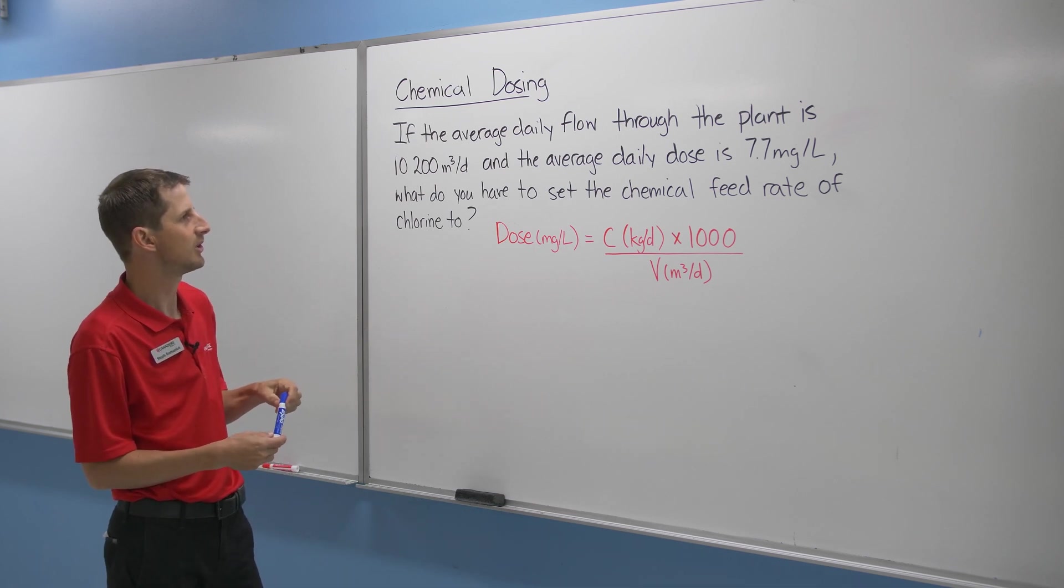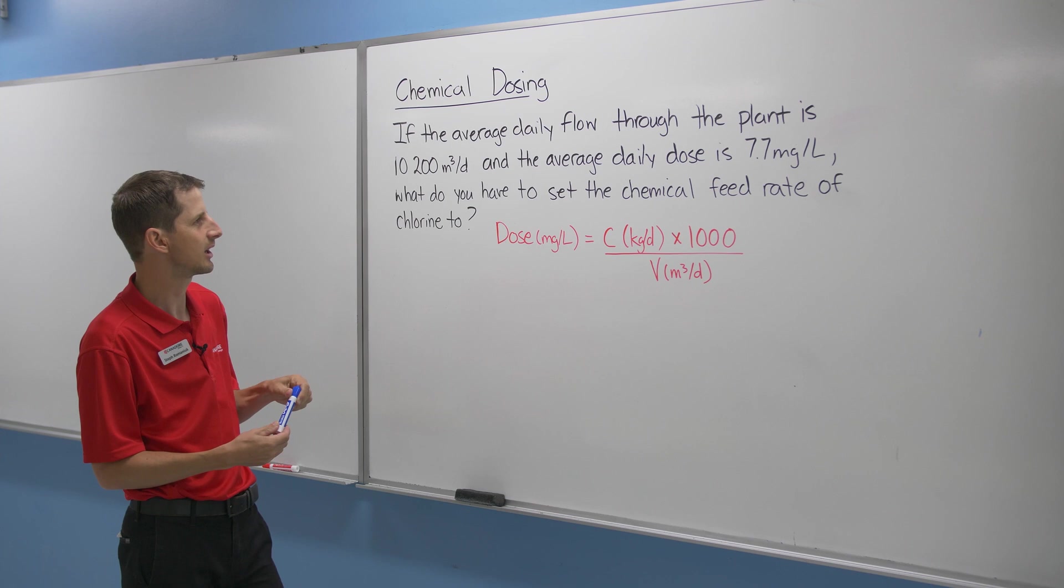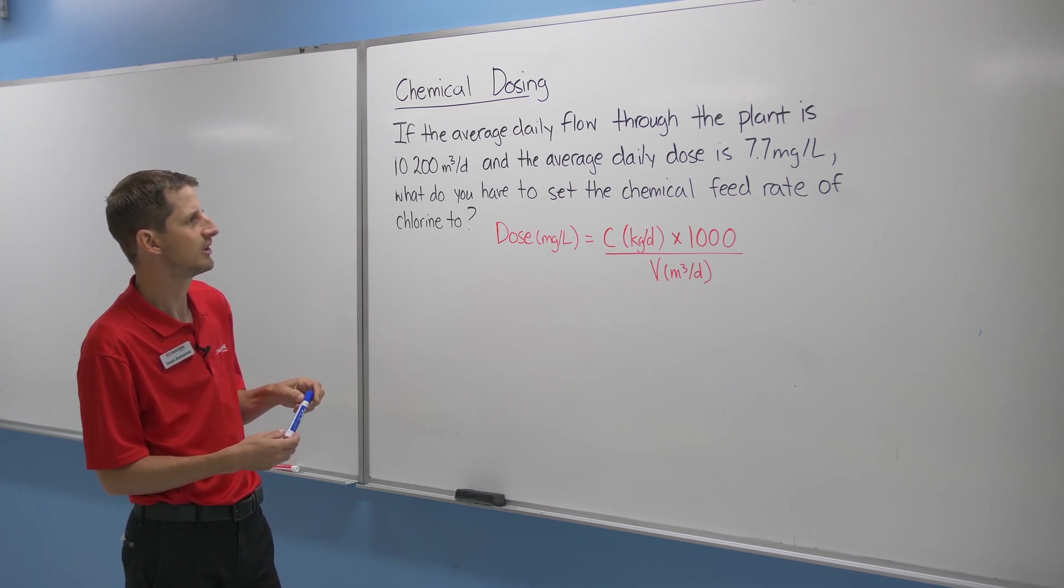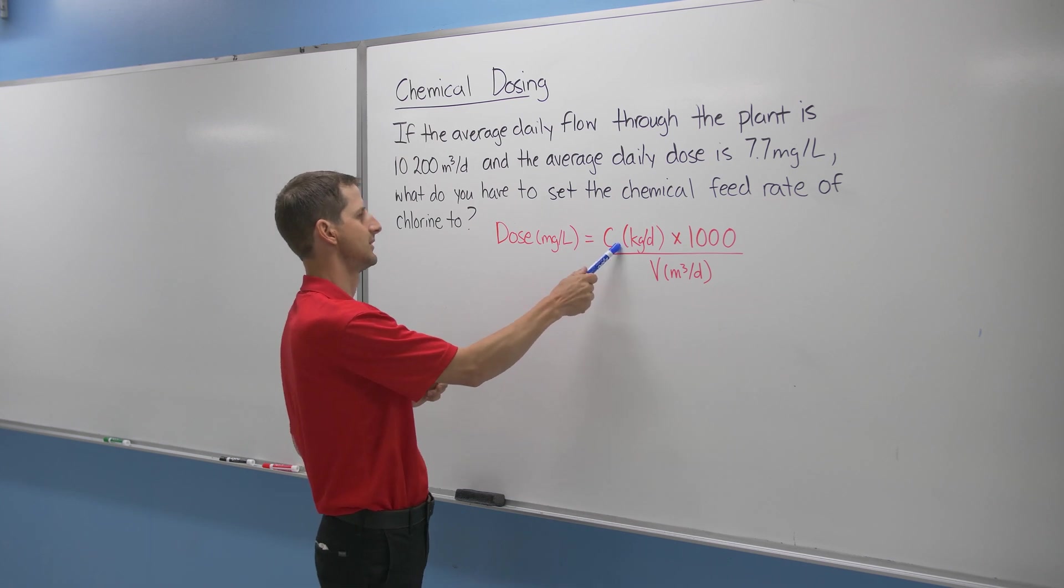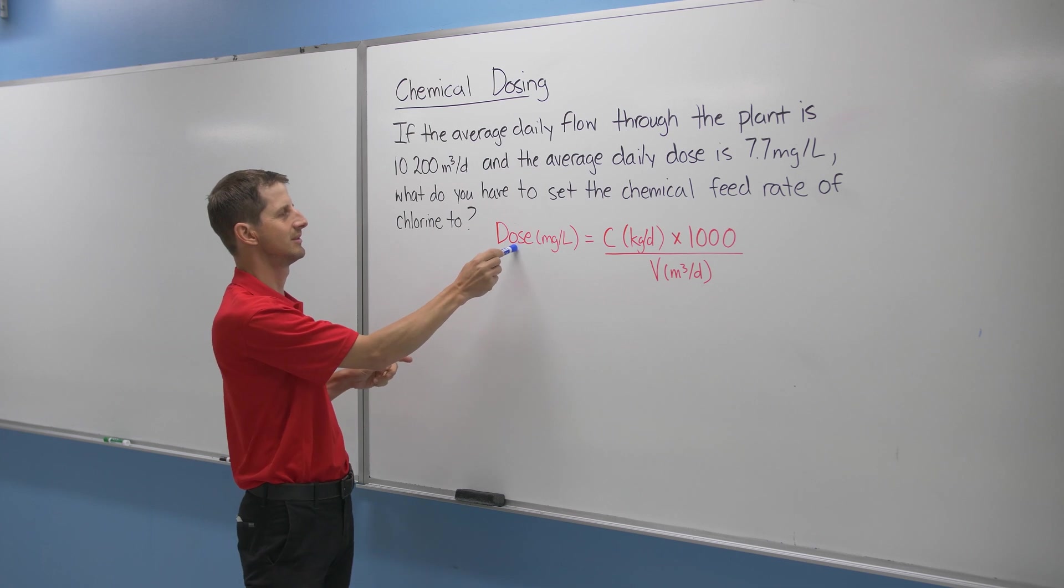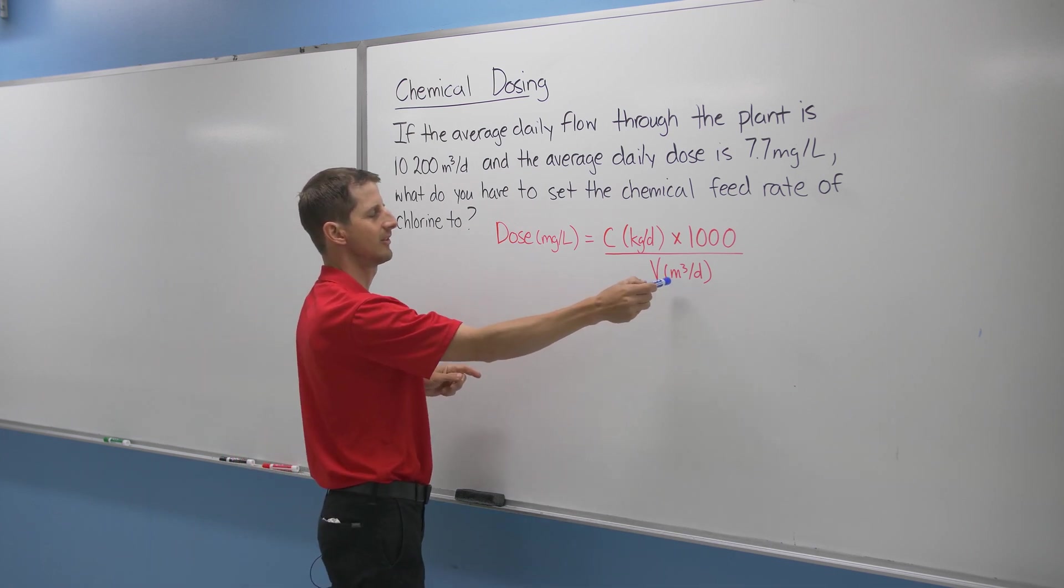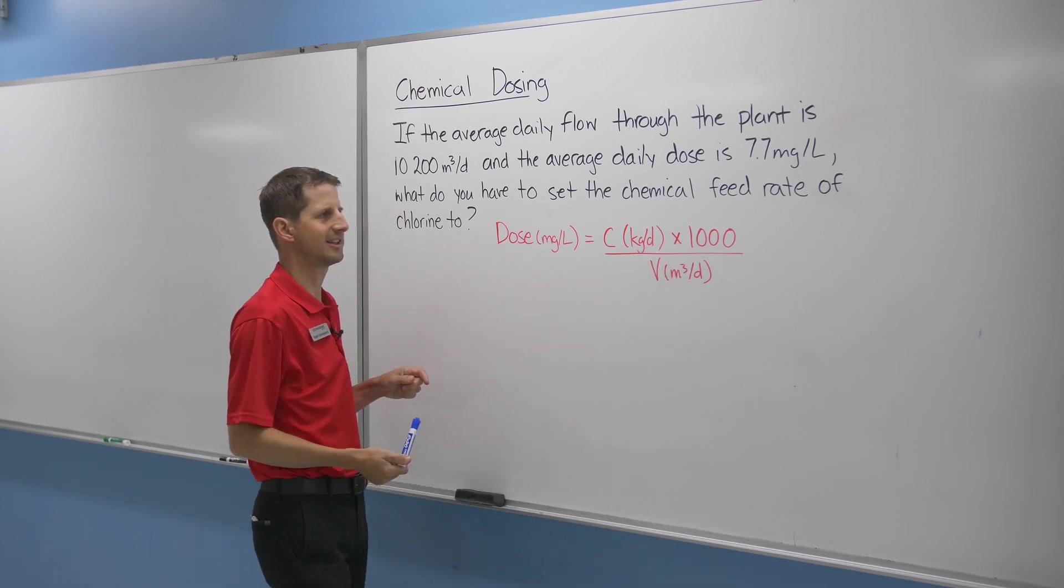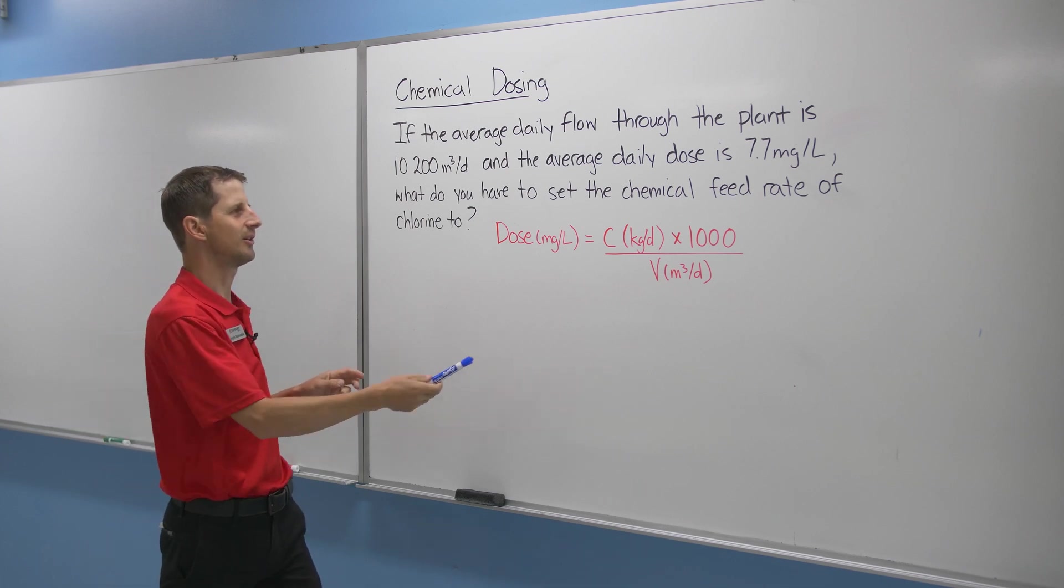So in this case, we're looking for what? Looking for the chemical feed rate, which is this guy here. So that's our unknown. We know our dose, we know our volume, and this is a conversion factor, I'll explain that later. So we need to solve for C.